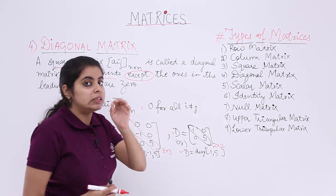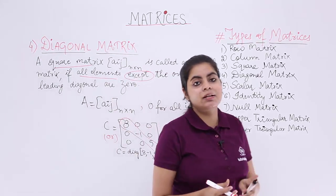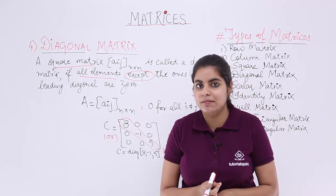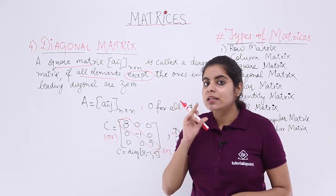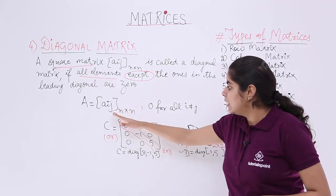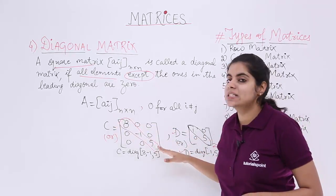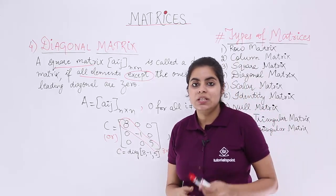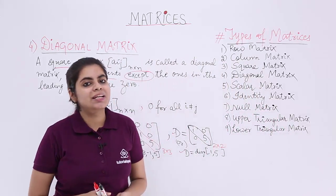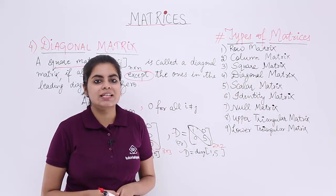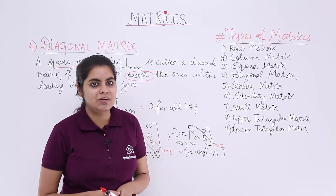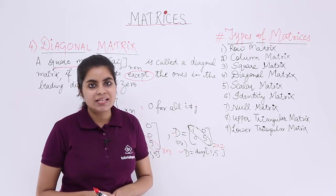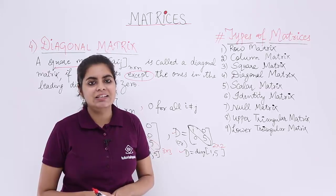One very important point: a diagonal matrix is possible only for a square matrix. Also, the diagonal to consider is the leading diagonal or the principal diagonal, not any other. In this video, we saw the fourth important type of matrix — the diagonal matrix. In the next video, we will be seeing the next important type called the scalar matrix.